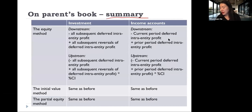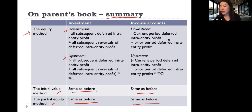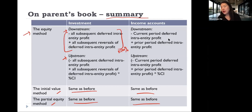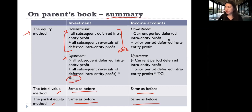Here is a summary: the initial value and partial equity methods do the same as before and are not affected by intra-entity transfers. For the equity method, depending on whether it is upstream or downstream: in the downstream case, we take out 100% of the current year intra-entity profit to be deferred and add back the previous year's deferral; in the upstream case, we multiply those amounts by the parent's percentage of ownership. Those are the formulas.